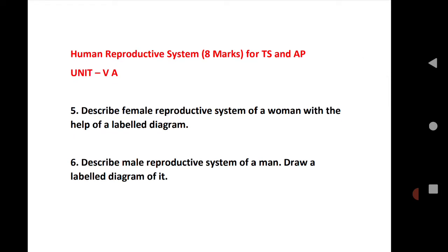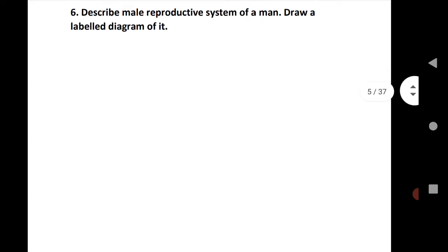Unit 3B is only for AP and covers the female reproductive system, while another question covers the male reproductive system. If you read these two questions, you will definitely get good marks.